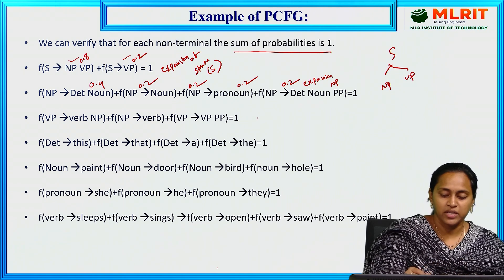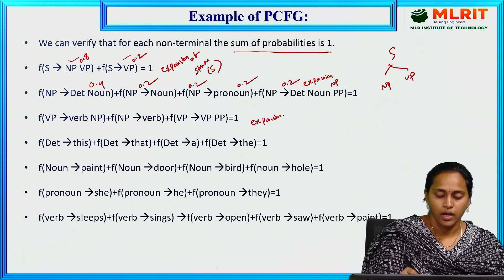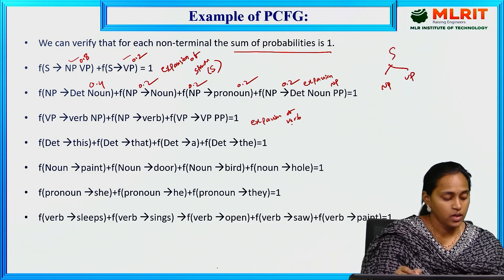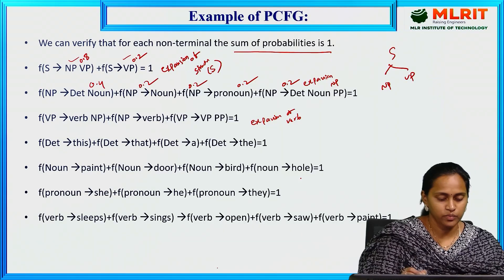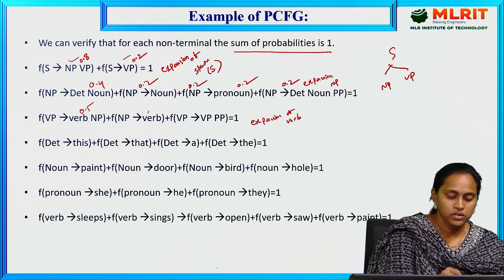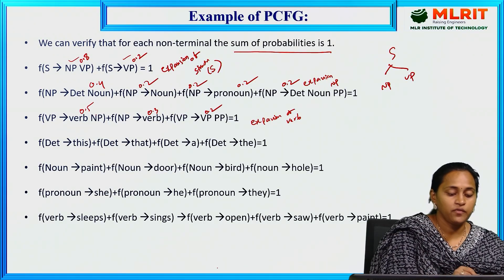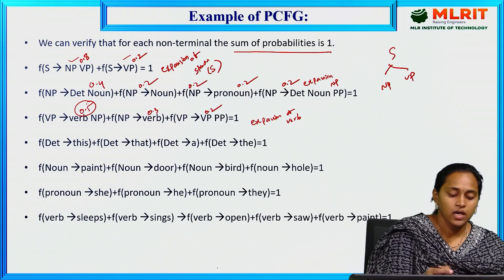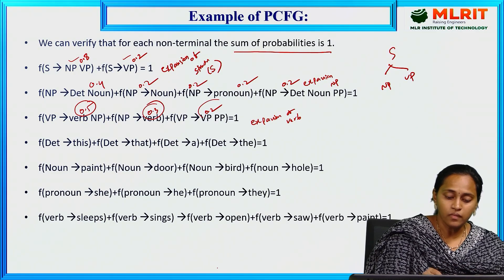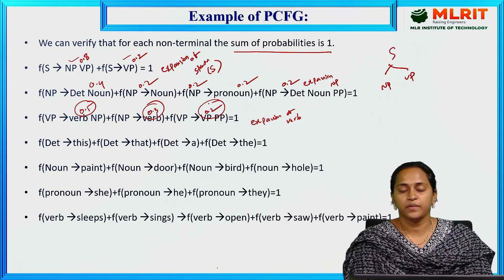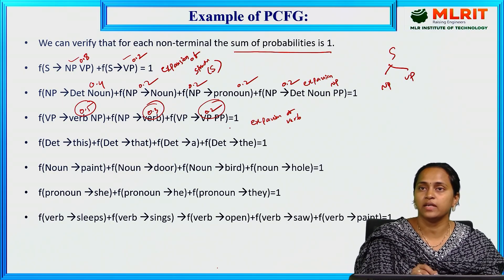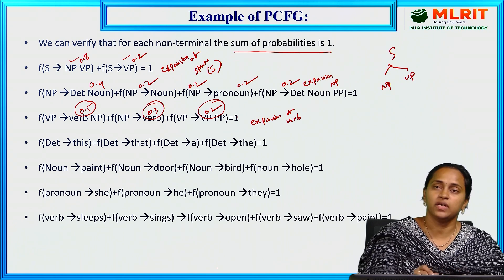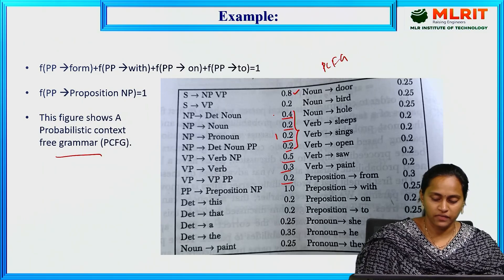Next is the expansion of the verb phrase. VP → verb phrase = 0.5, VP → verb = 0.3, VP → verb and preposition = 0.2. So 0.5 plus 0.3 plus 0.2 equals 1 — verb phrase is 50%, verb is 30%, and verb plus preposition is 20%. This is how we assign importance to each POS tag.